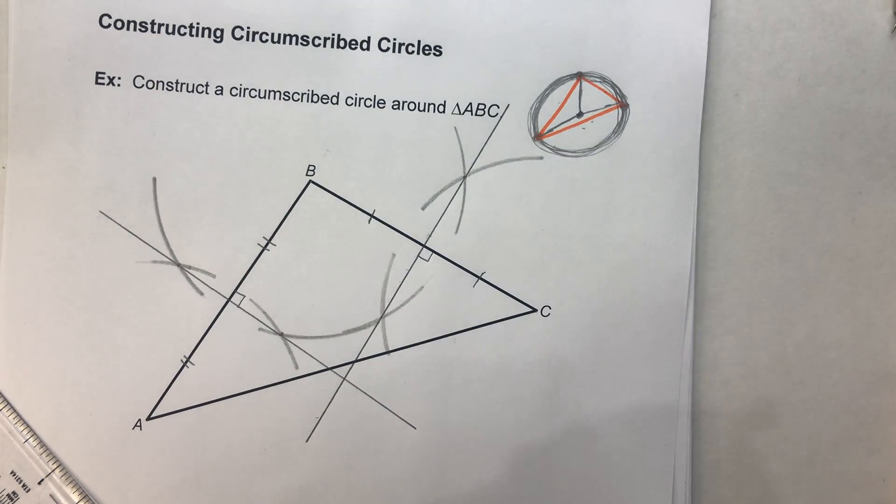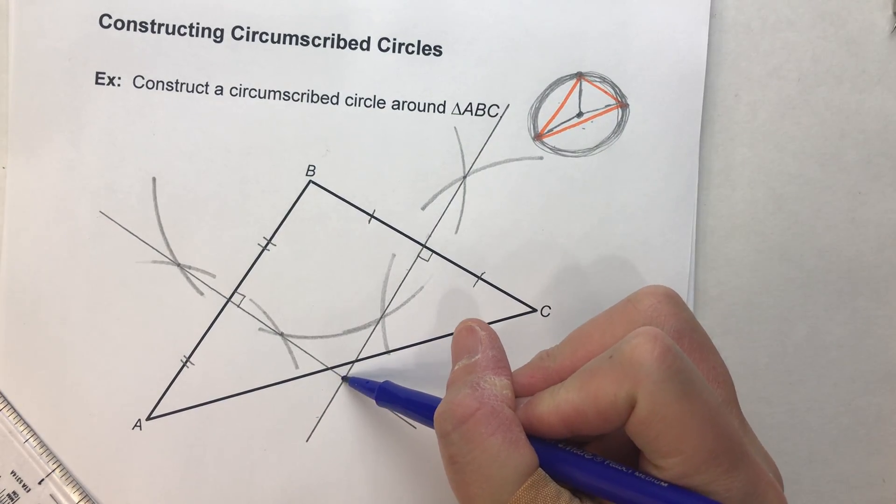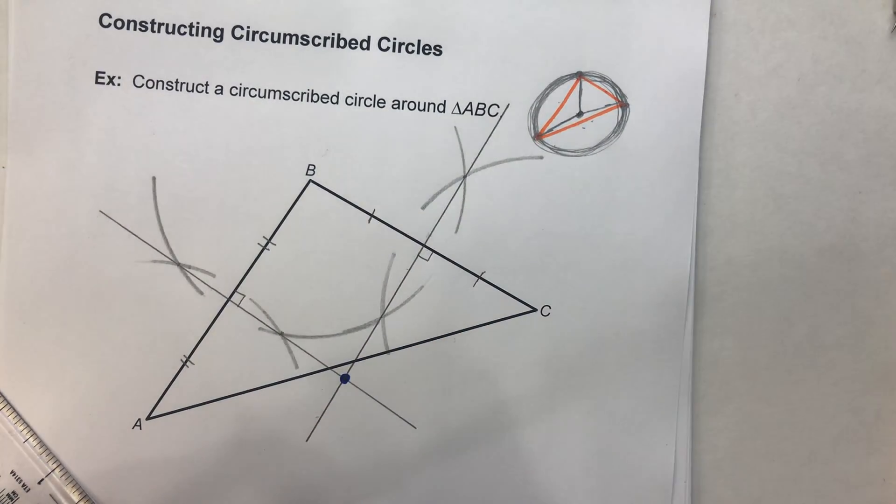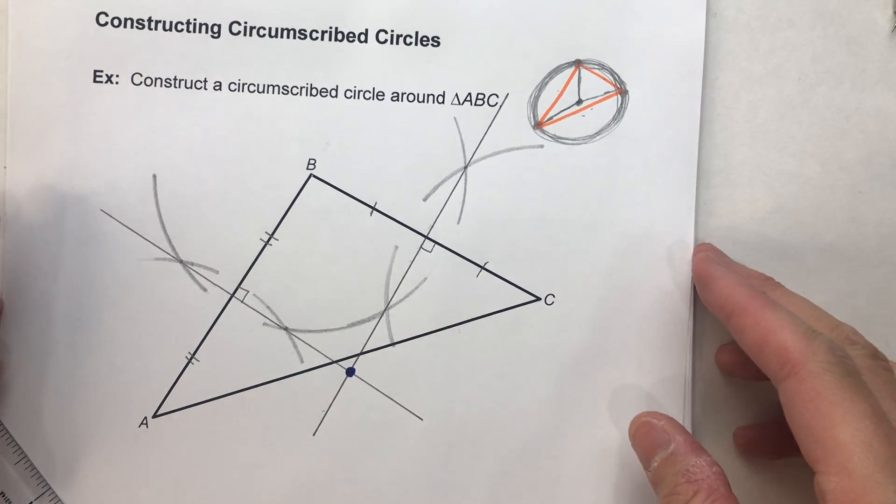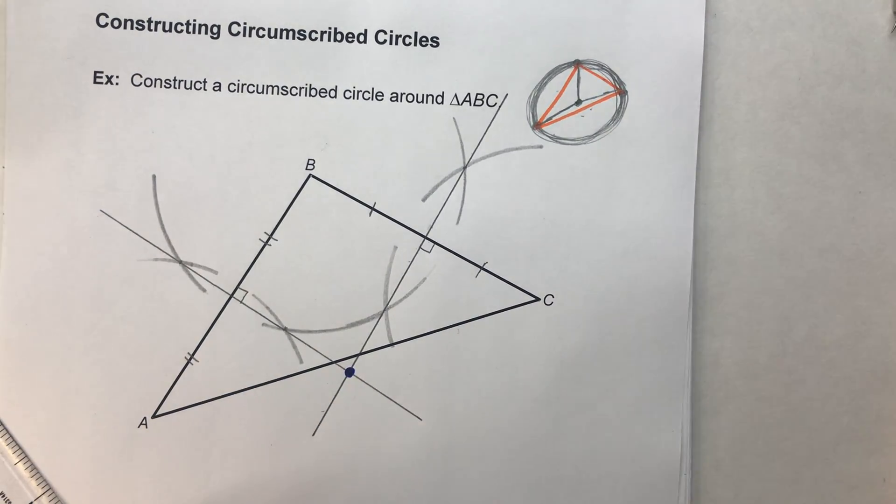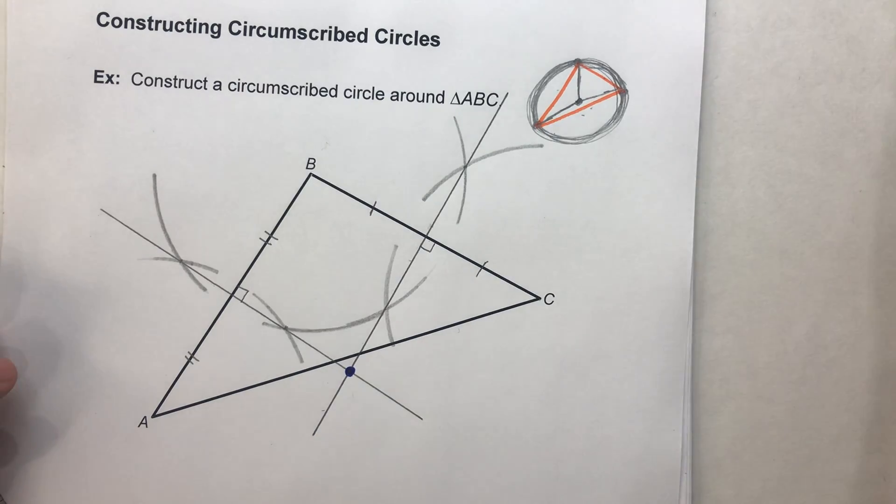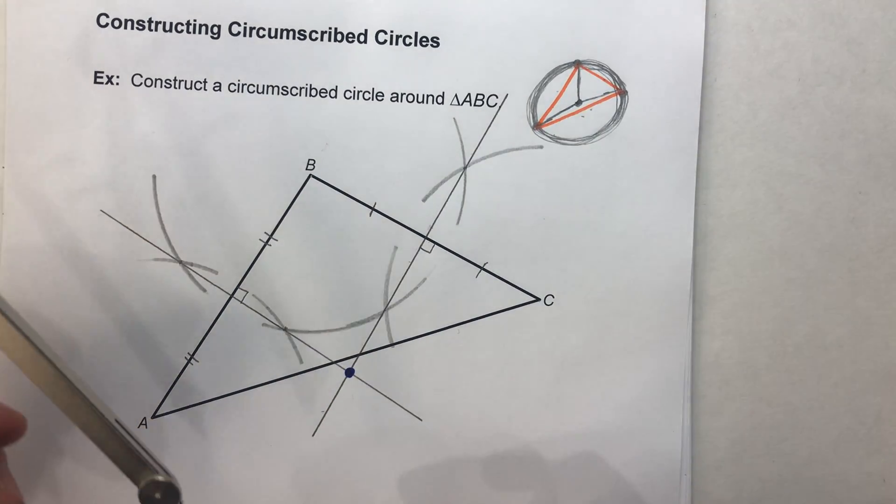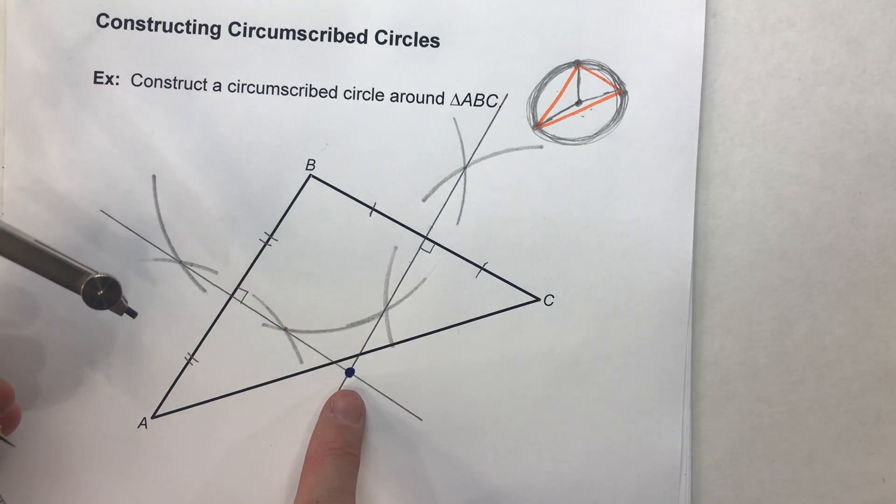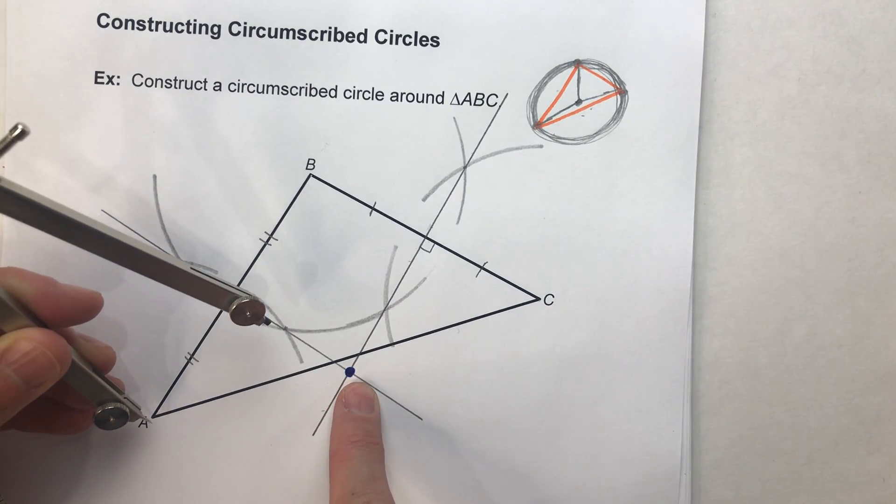So if I'm doing this right, this point right here should be our circumcenter. It should be our circumcenter. But, I always like to do the third side just to make sure. Because my third side, my third perpendicular bisector should go through that point.